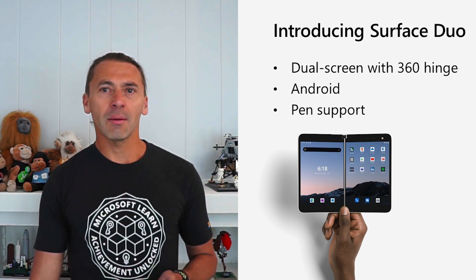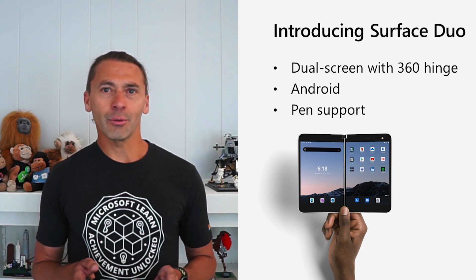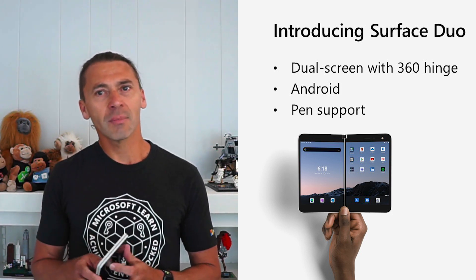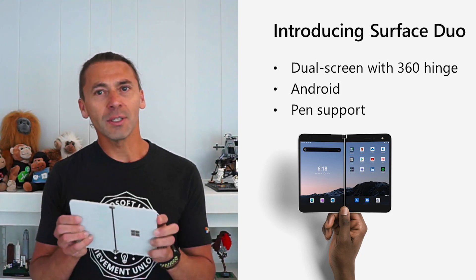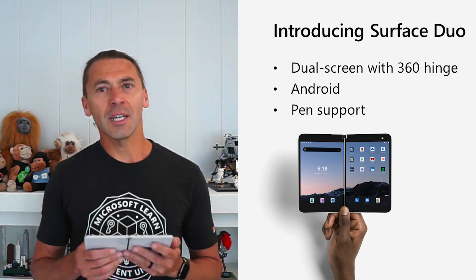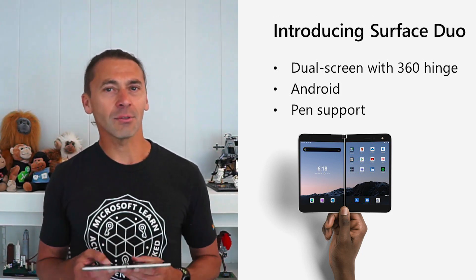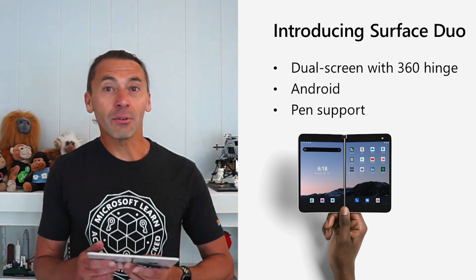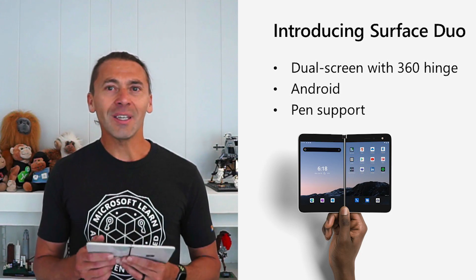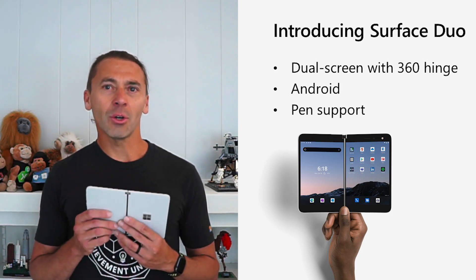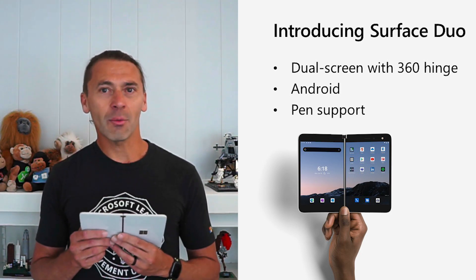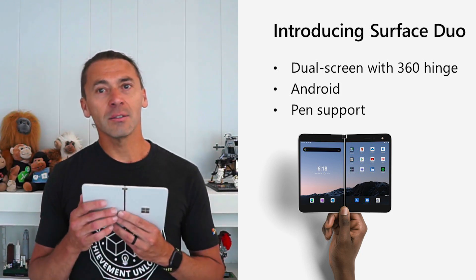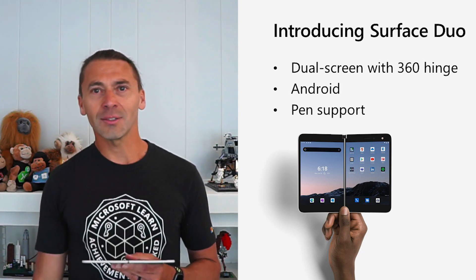All existing Android apps run on the Surface Duo. It behaves like any other device when apps are on a single screen. When apps are spanned across both screens, developers can detect this and enhance their user experience for the extra display area. Because it's Android, if you're a C# and .NET developer, the easiest way to build apps for the Surface Duo is using Xamarin Android or Xamarin Forms. NuGet packages are available to help detect device capabilities and adapt layouts for two screens.